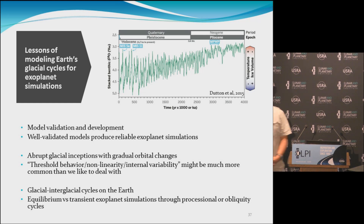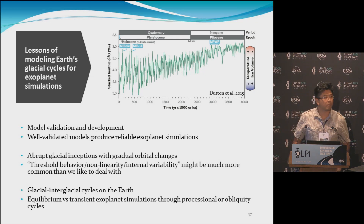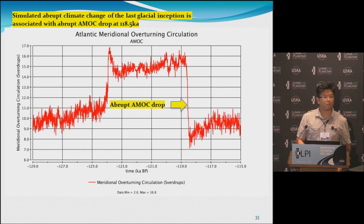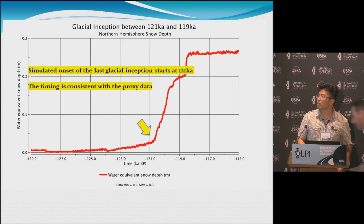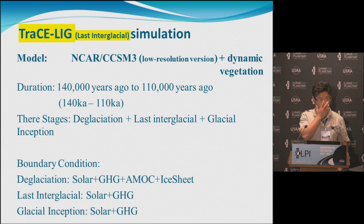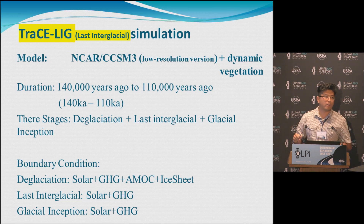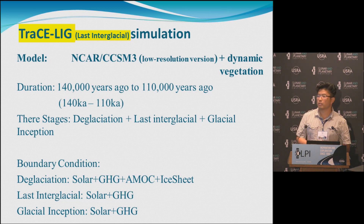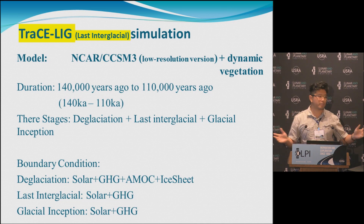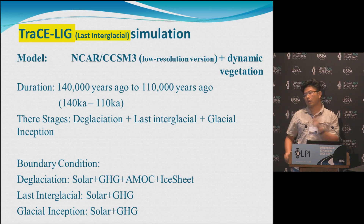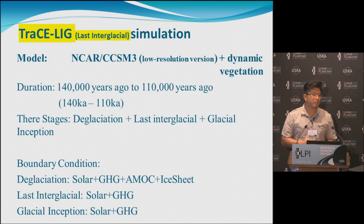Question: You said AMOC is used as a boundary condition — I'm surprised, because the ocean model can calculate the AMOC. Response: That's a great question. It's similar to CO2 — we cannot produce CO2 in the model, we have to prescribe it. Similarly with AMOC, we cannot produce AMOC because we don't know what controlled the change of AMOC during the last deglaciation. Nobody knows right now. There is a huge debate about whether icebergs caused it, or whether the AMOC caused the icebergs — it's still confusing.